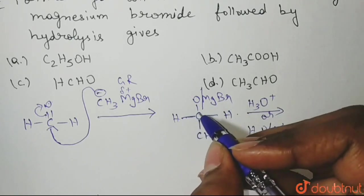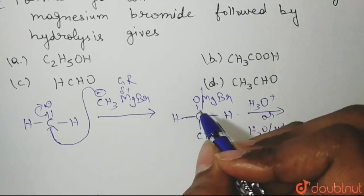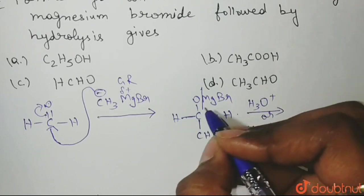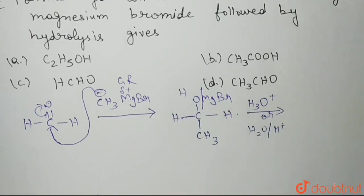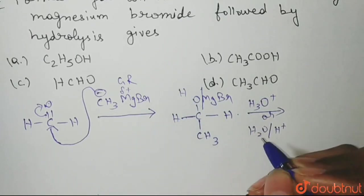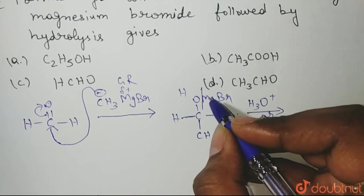Oxygen has a negative charge, Mg has a positive charge. When we break the bond, H will come here from H2O, H positive and OH minus. H will come here and OH minus will go to Mg.